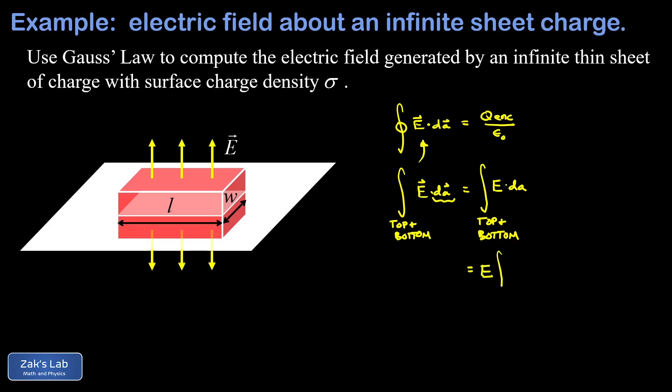We end up with E times the integral of dA over just the top and bottom of the pillbox. Well, the integral of dA over the top and bottom of the pillbox just means the area of the top and bottom put together. Each of those is just length times width, so we end up with E times two length times width.